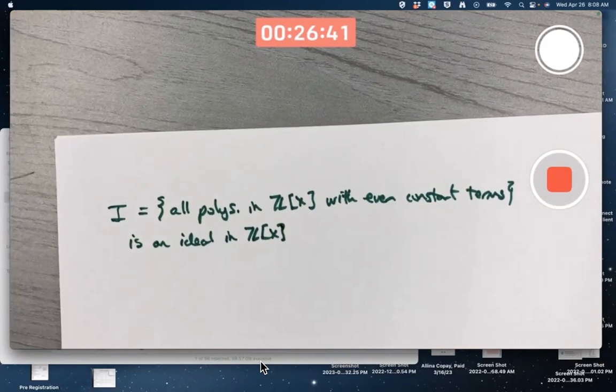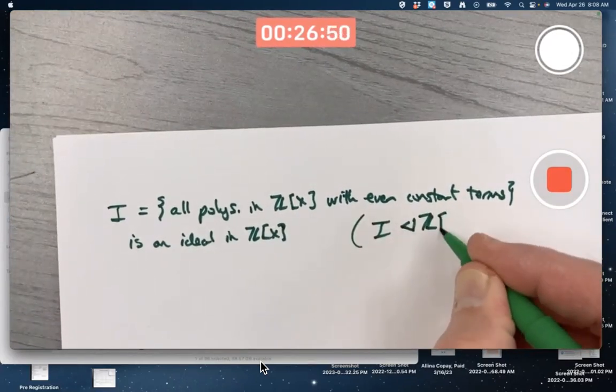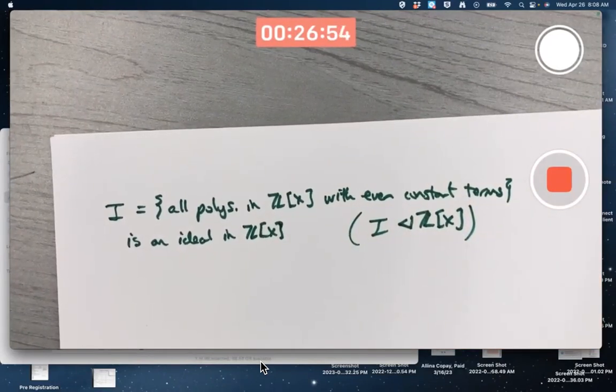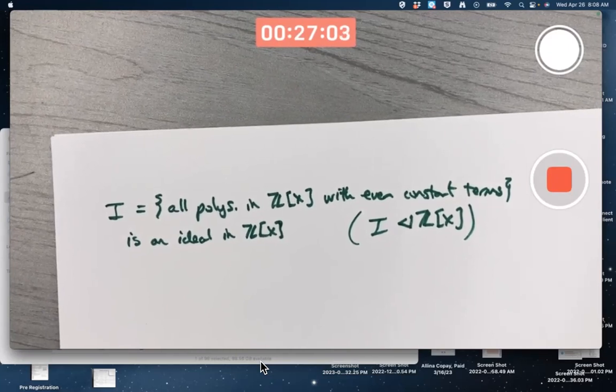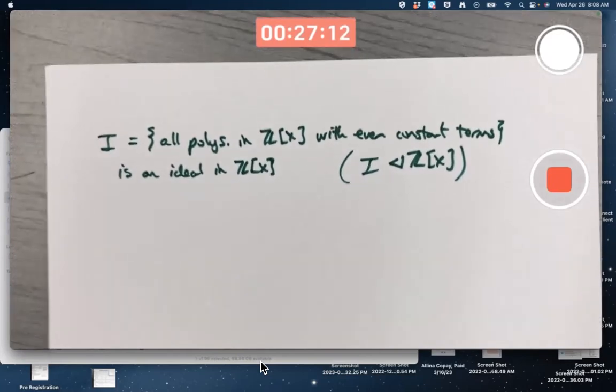One funny difference here between group theorists and ring theorists is, could we write this kind of notation like normal subgroup notation? Well you could, but ring theorists don't seem to do that. They seem to be more wordy and say 'is an ideal in there.' At least I've never seen any ring theorists do that, not that I've seen a ton of ring theorists in my life.